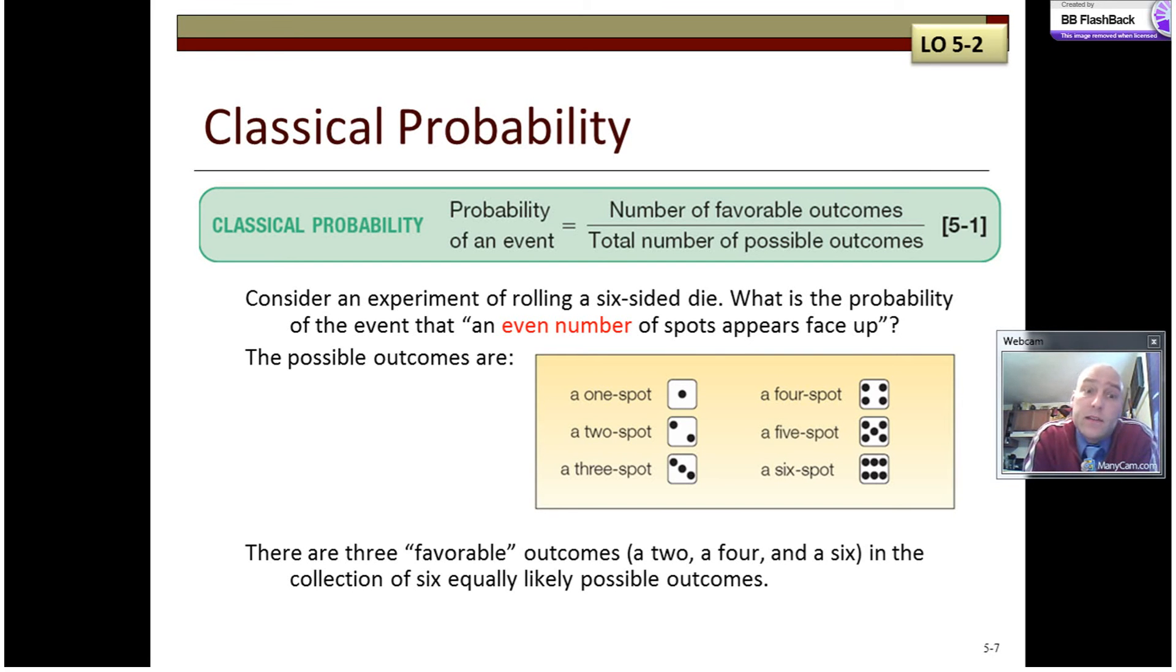Classical probability, like we said, is based on the equal likelihood of things happening. Here we're rolling a die, and we're looking for the event, again, collection of possible outcomes, that an even number of spots will appear on the top of the die. 2 and 4 and 6 are the three possible favorable outcomes. 1, 2, 3, 4, 5, 6 is the total number of possible outcomes. It's classical probability.